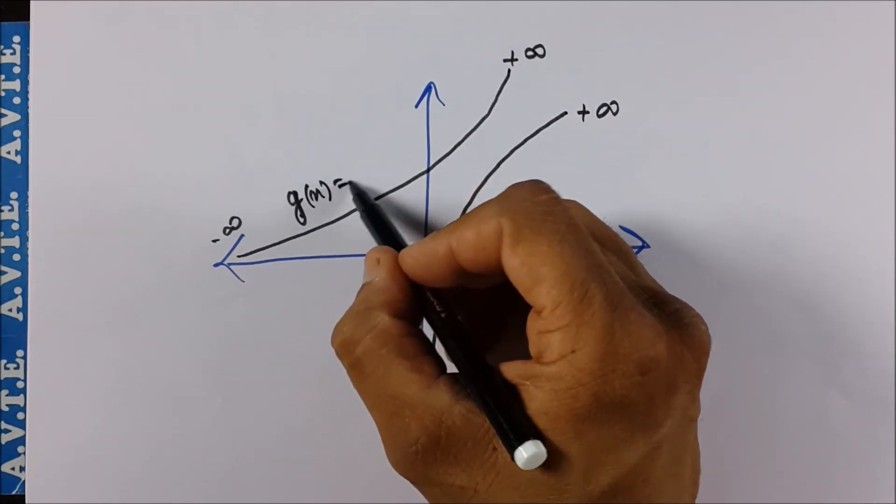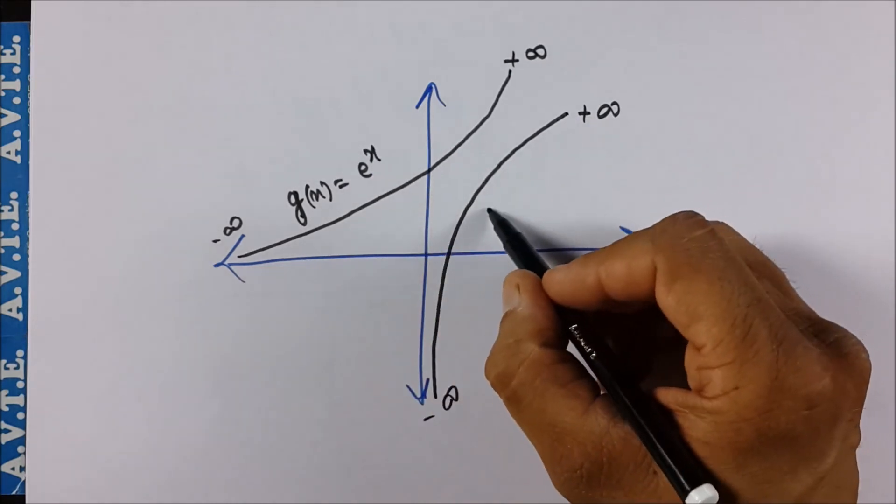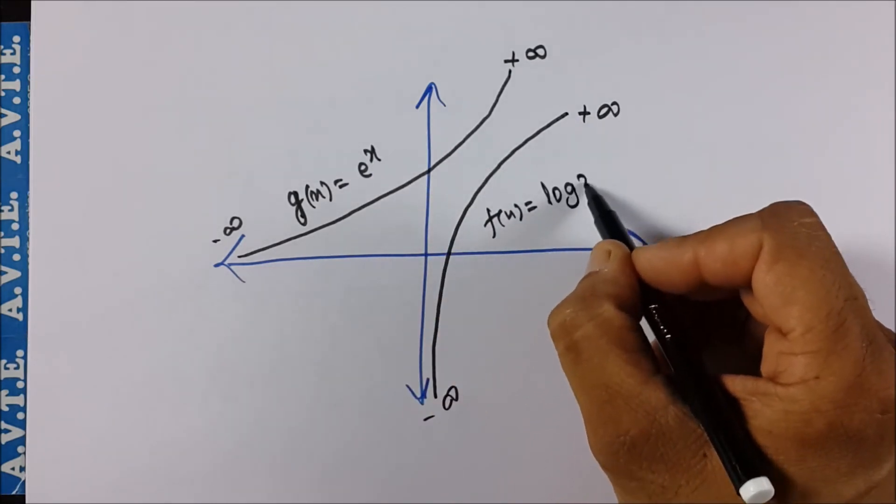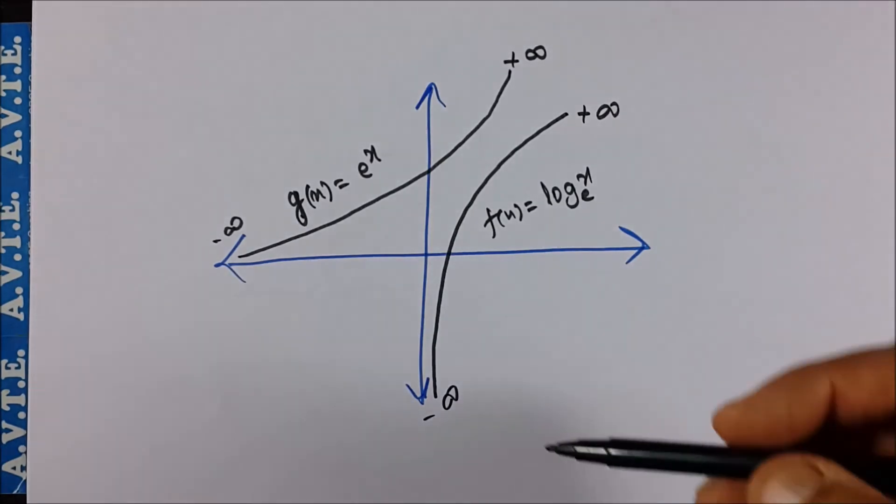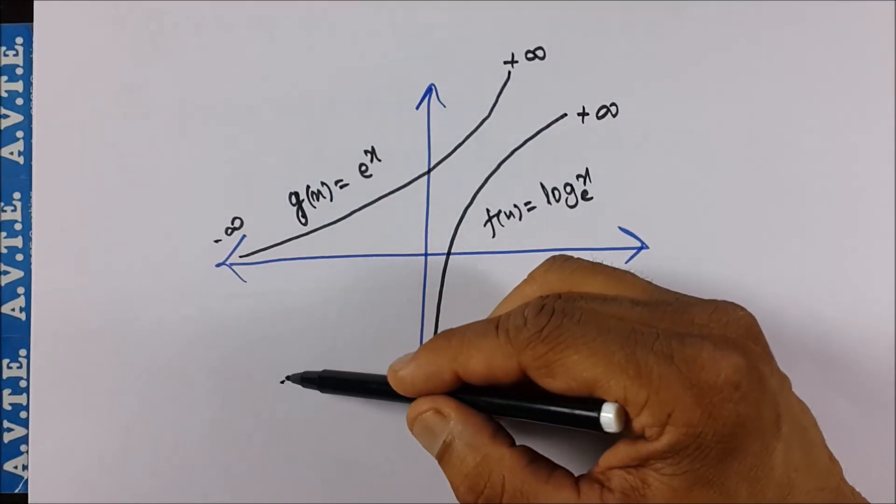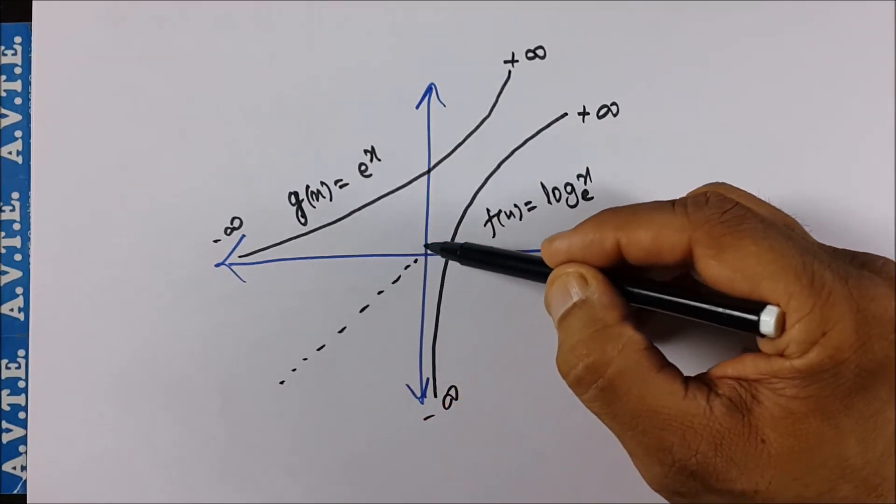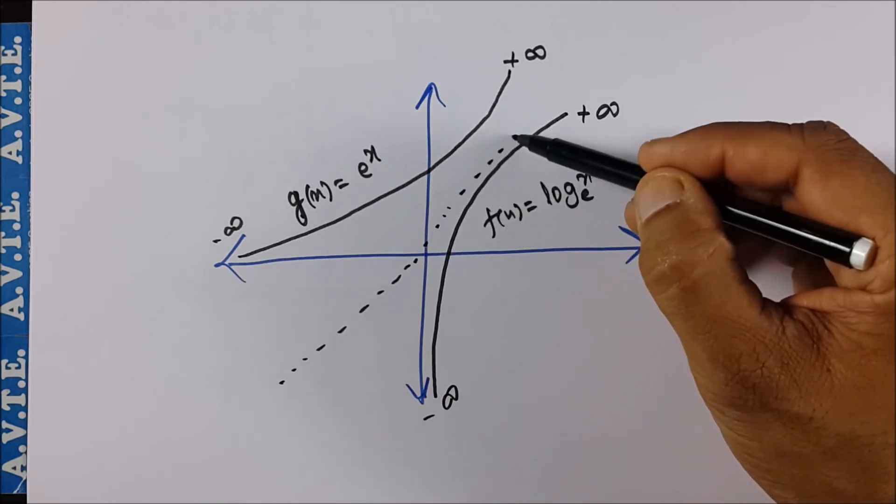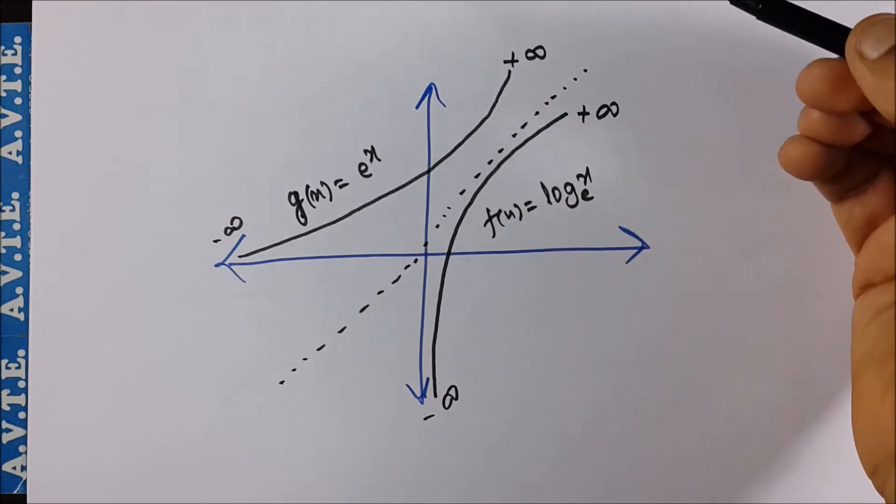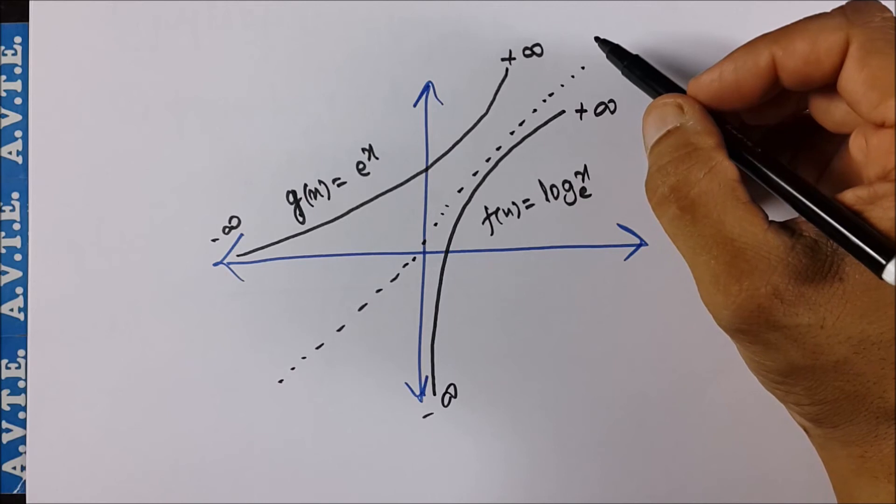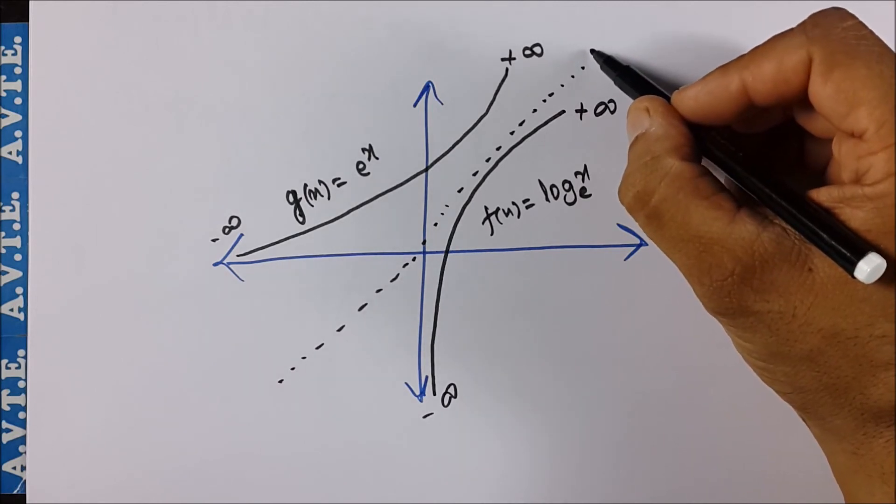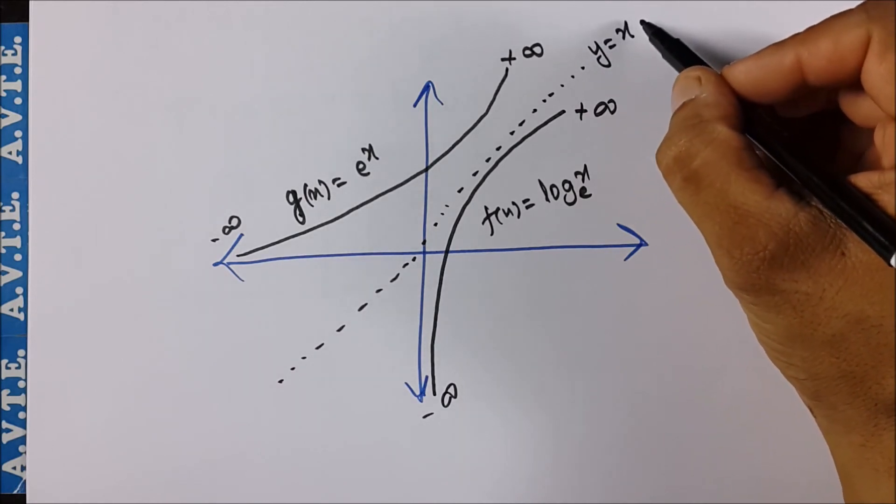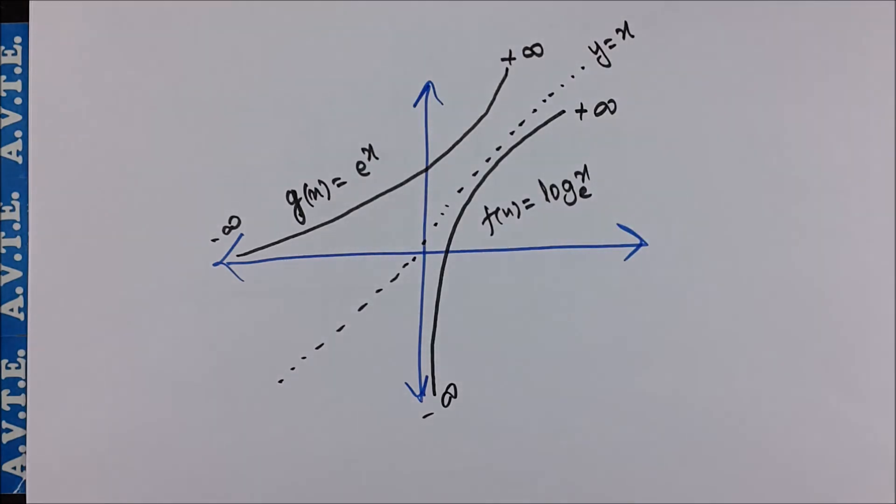This is g(x) = e^x and this is f(x) = log x base e. Both these graphs are symmetric to, well my graph is not so precise so you'll excuse me on that, both these graphs are symmetric to what we call the identity function, that is y is equal to x.